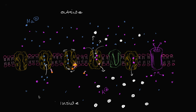In the video on the sodium-potassium pump, we talked about how it helps a cell establish its resting membrane potential. It does that by actively pumping three sodium ions out for every two potassium ions it pumps in. That ratio of three to two by itself doesn't establish the full resting membrane potential.